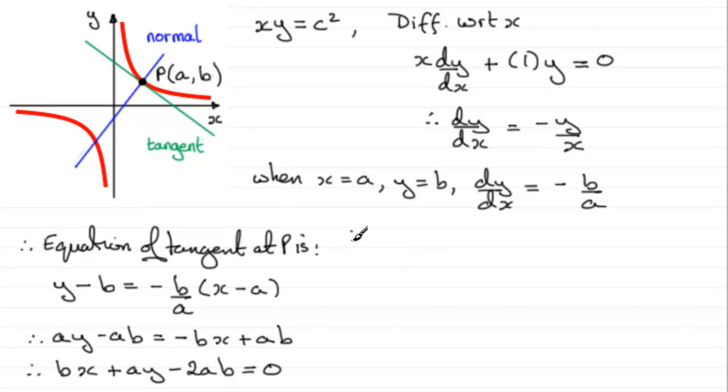If we're asked to find the equation of the normal, then we need that gradient of the normal, and it's going to be the negative reciprocal of minus B over A. So the gradient of the normal would be A over B.